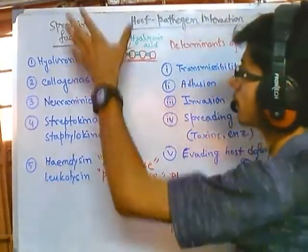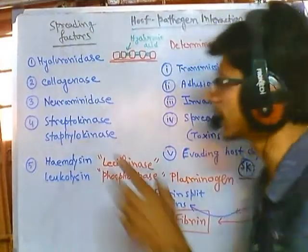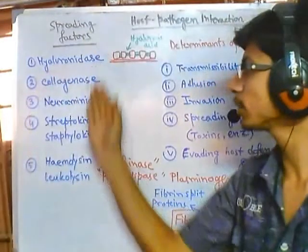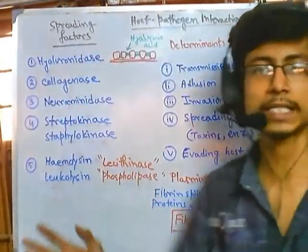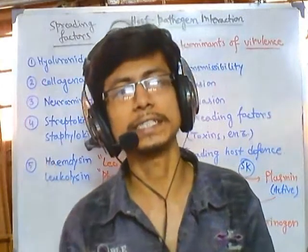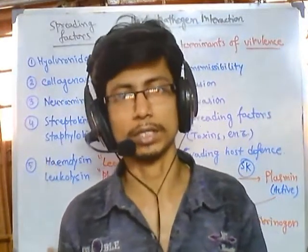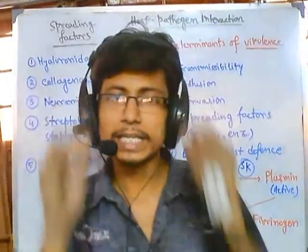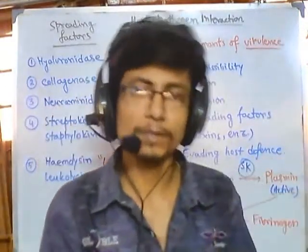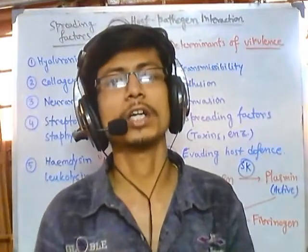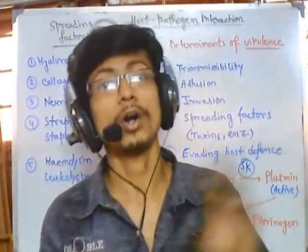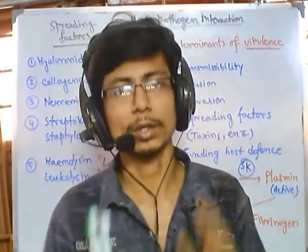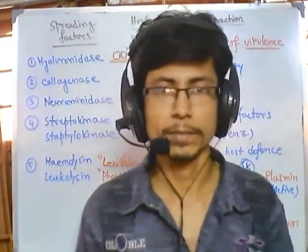These are the different spreading factors - all of them act as spreading factors. By secreting one or two of these kinds of factors, bacteria gain extra advantage in spreading disease in host tissue or the host body. After all, they need to kill the cell, and for killing the cell they require another type of compound called toxins - like endotoxins or exotoxins. We are going to look at toxins and how they affect host cells in the next video. Thank you.